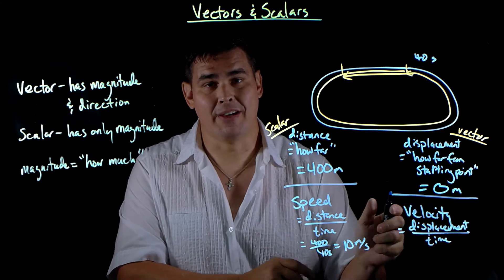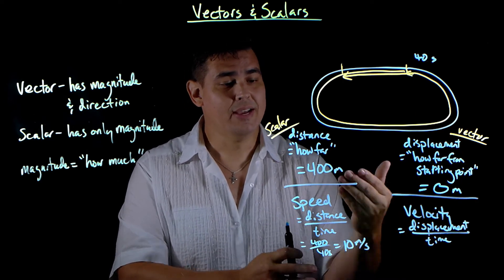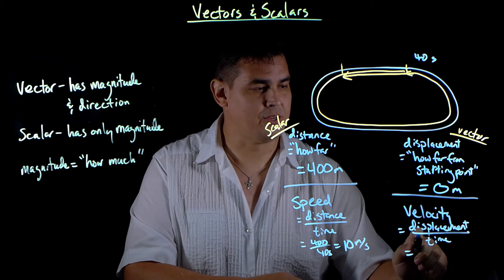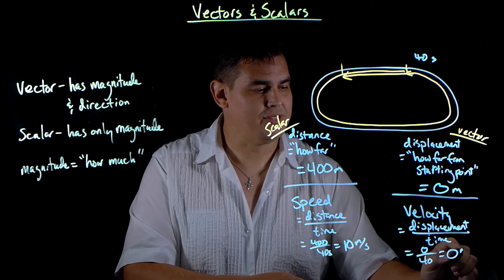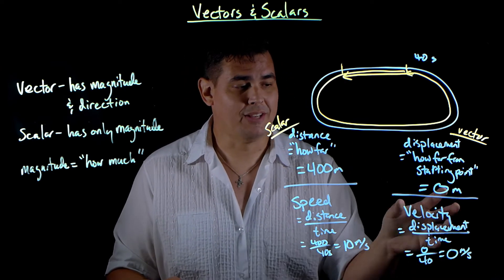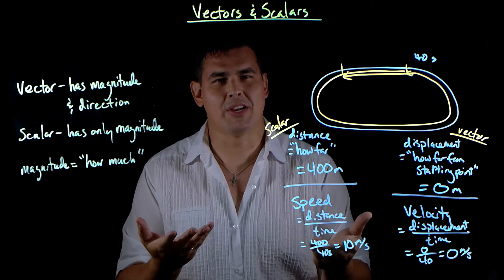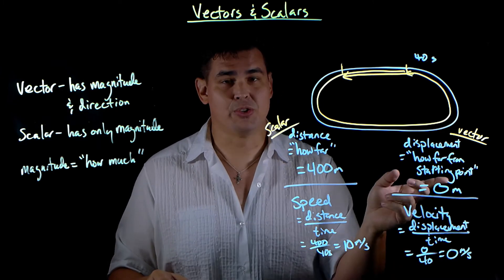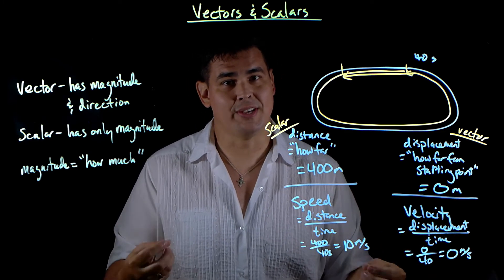Velocity is displacement divided by time, so velocity is a vector — it has direction attached to it. For our first example where you ran a full lap and ended where you started, the displacement was 0, so velocity is 0 divided by 40, which is 0 meters per second. There will be times when speed is more useful and times when velocity is more useful. If something changes direction, the velocity changes, and that direction change is going to matter for things like energy and momentum.